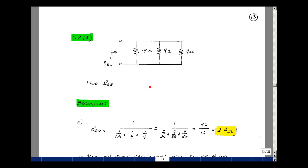Suppose that I have three resistors in parallel, 18 ohms, 9 ohms, and 4 ohms, and I want to find the equivalent resistance.